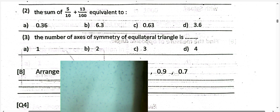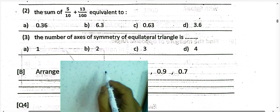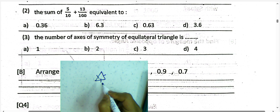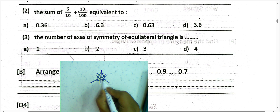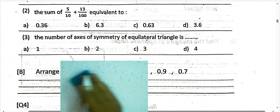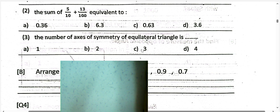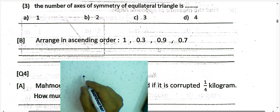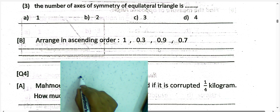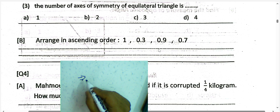Question number 3: what is the number of axes of symmetry of an equilateral triangle? An equilateral triangle has all sides equal, so we have three lines of symmetry — three axes of symmetry of the equilateral triangle.